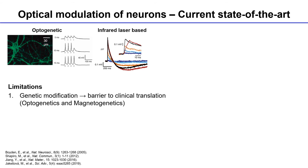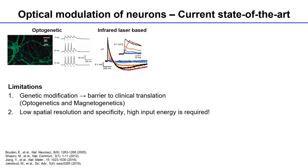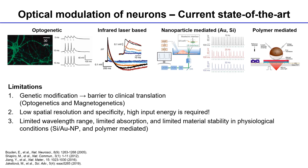The barrier of the infrared approach is low spatial resolution and high input energy. In recent years there has been a surge of interest in using nanomaterials to modulate neuronal or cellular activity — including cardiomyocytes and muscle cells — using photothermal or photoelectrical effects. However, these materials are limited in absorption wavelength, photothermal conversion efficiency, and material stability.